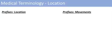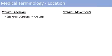For location prefixes, we've got epi, peri, and circum — these all mean around the location or around the object. Just think of perimeter, circumference, and the epicenter, where you're kind of around the center.